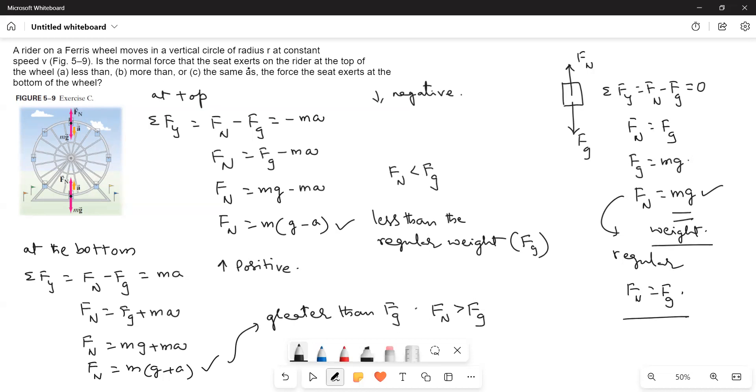This is what he is asking. So, is the normal force that the seat exerts on the rider at the top of the wheel less than, more than, or the same as the force the seat exerts at the bottom of the wheel? It is less than the force exerted at the bottom. Force exerted at the bottom is M times (G plus A). Here, M times (G minus A). These two you have to compare. When you compare, this is less than this one.